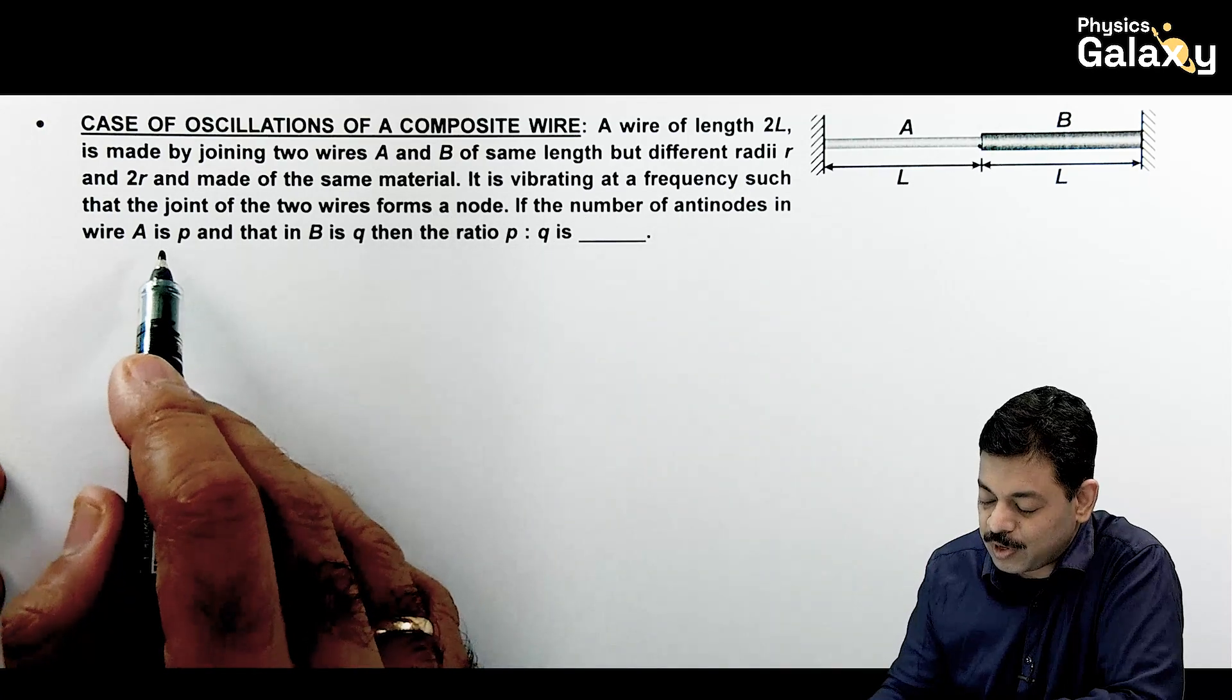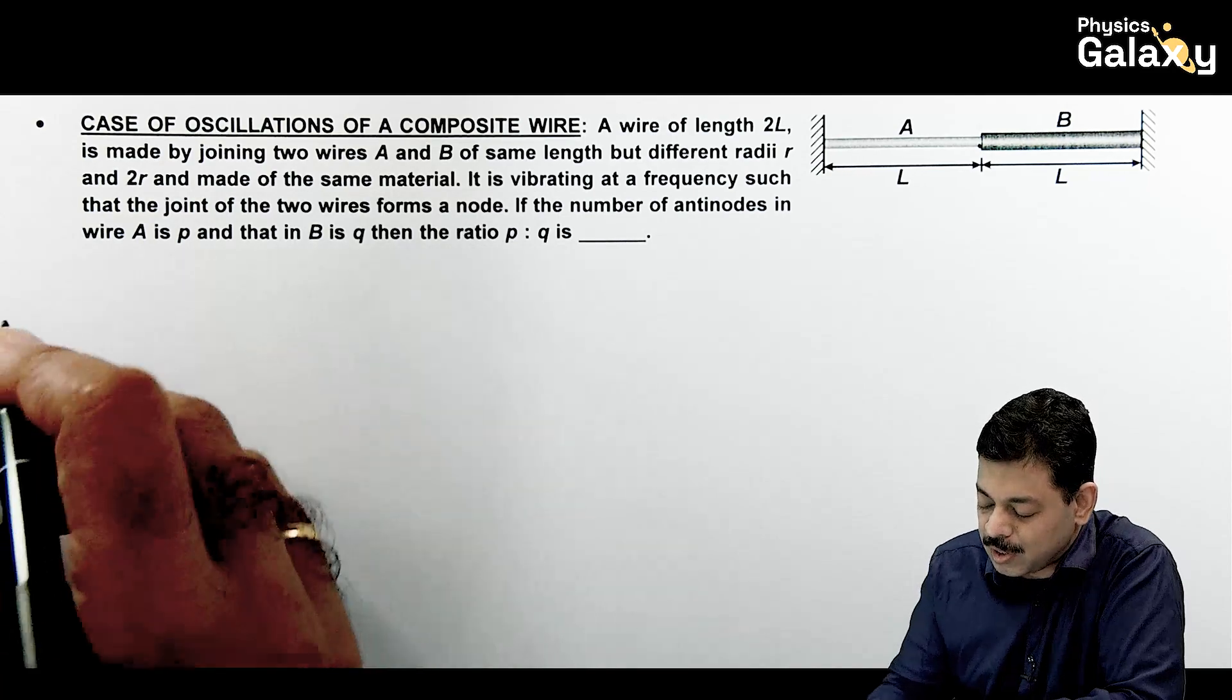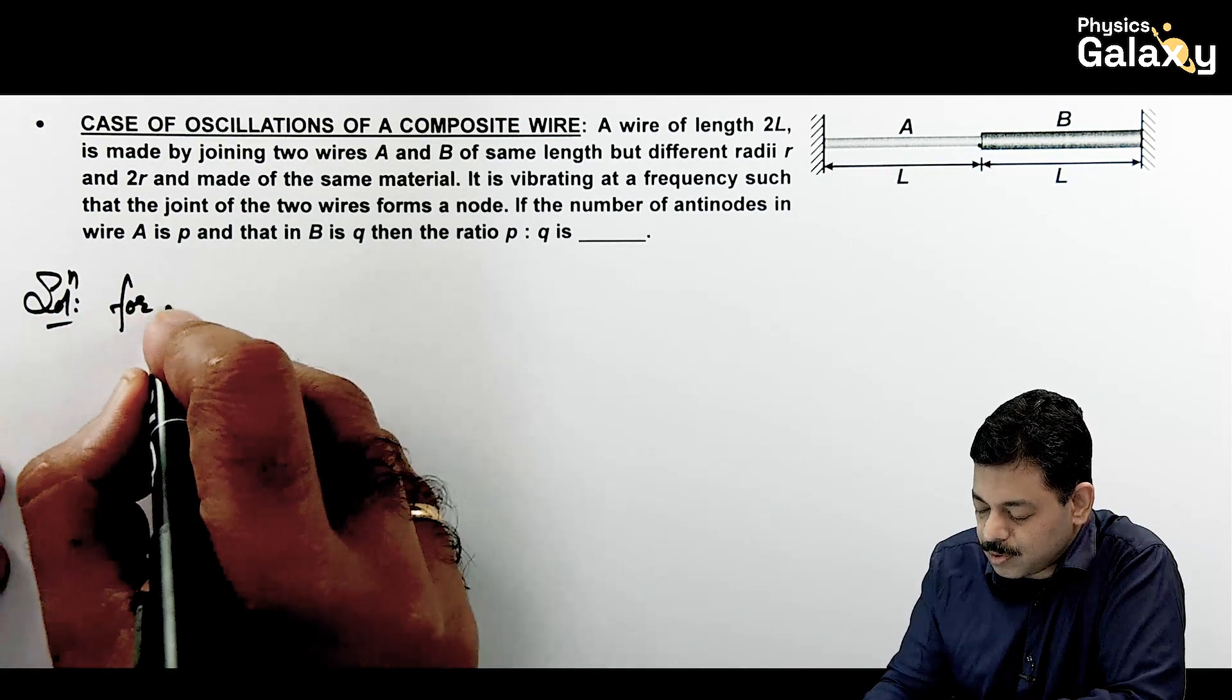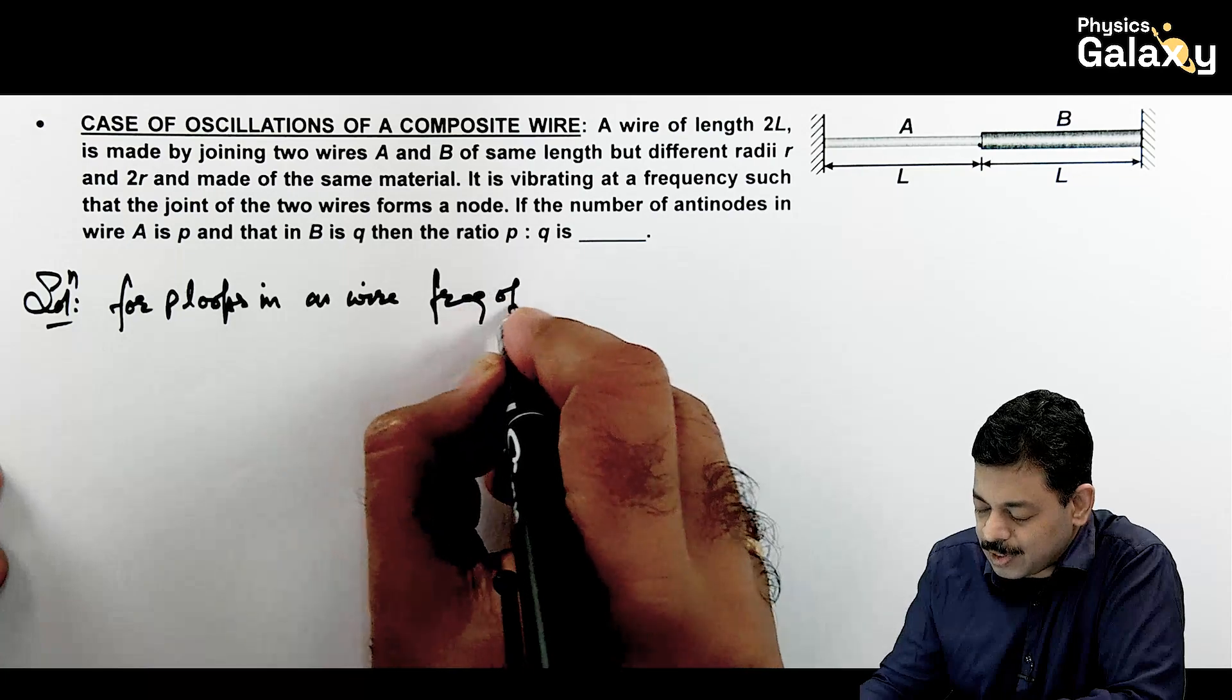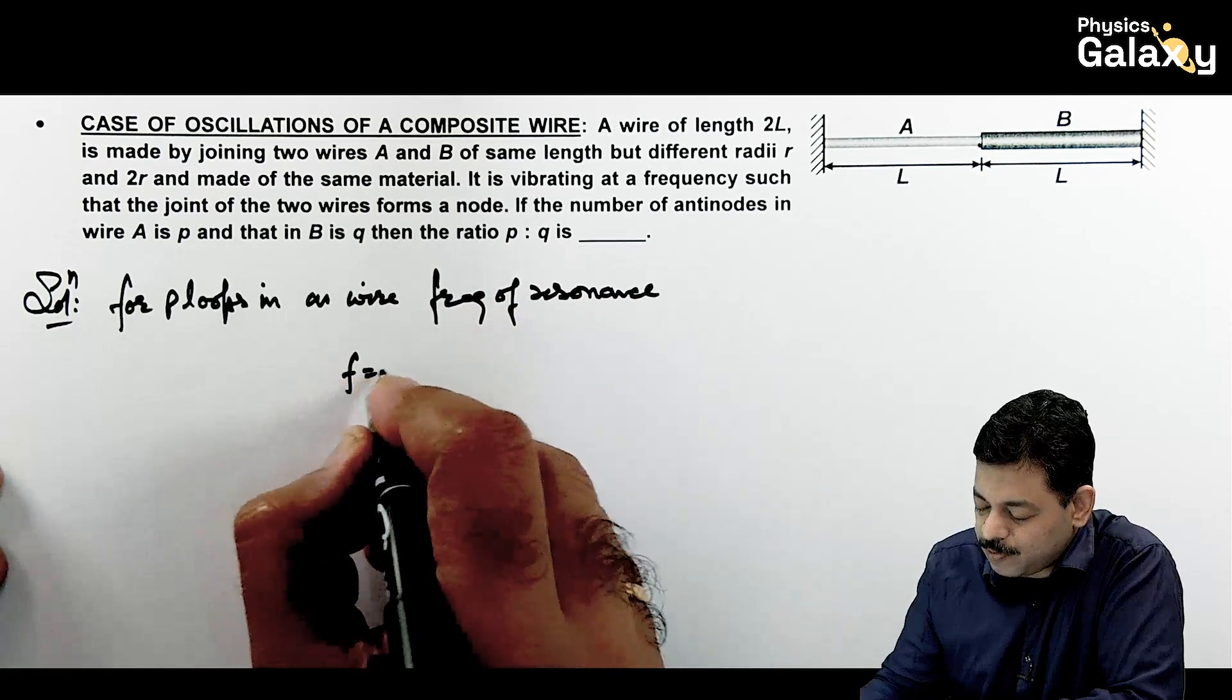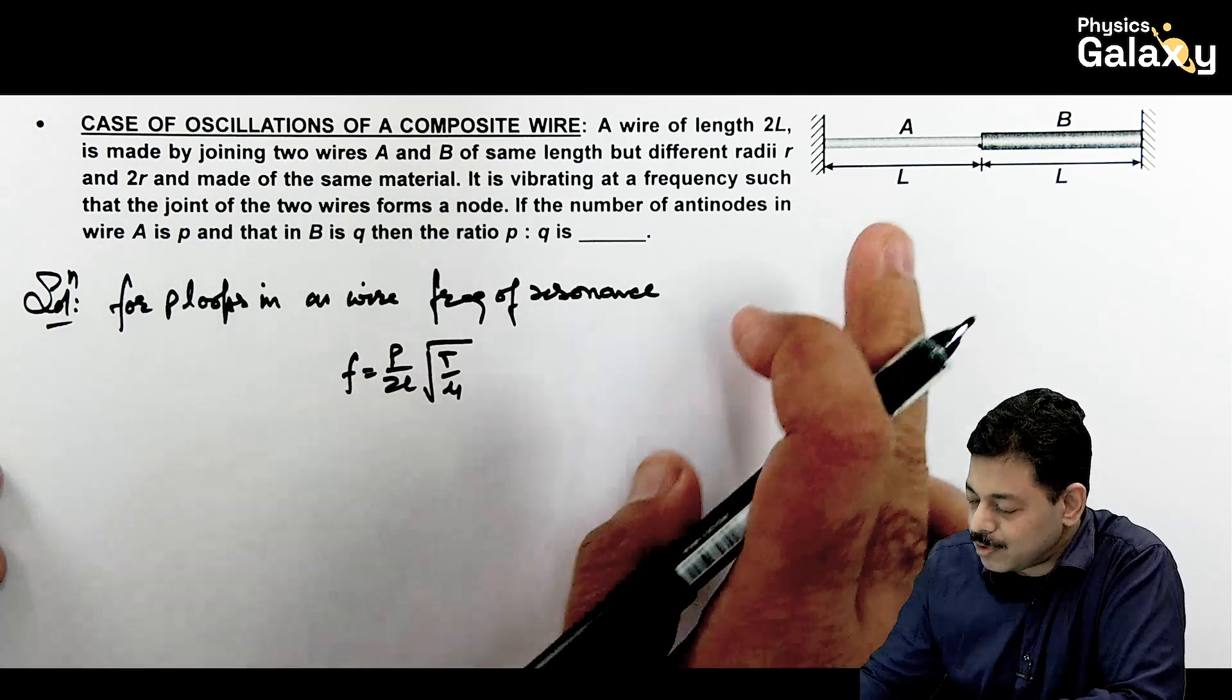So the number of anti-nodes in wire A is P and that in wire B is Q. So P by Q is the ratio. We know well for P loops in a wire, the frequency of oscillation is a frequency of resonance that is given as F is equal to P by 2L root of T by mu. Now in this case for the first wire, if we look at mu...